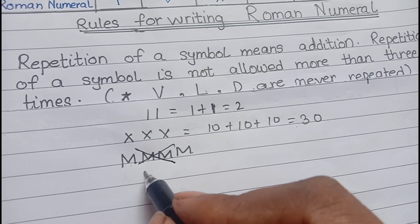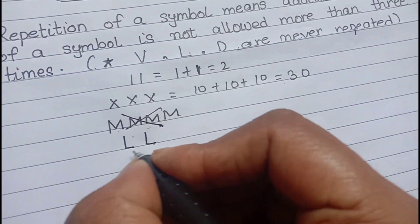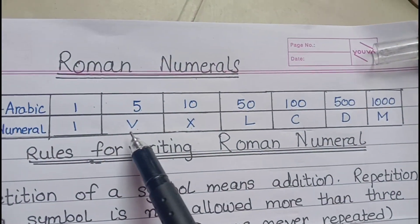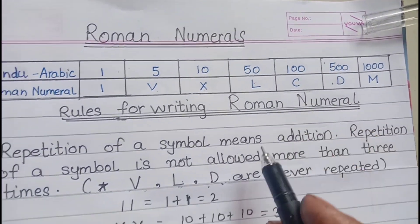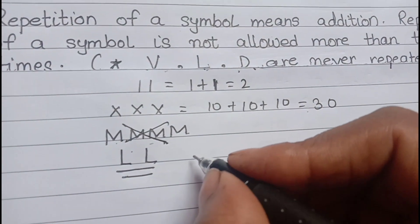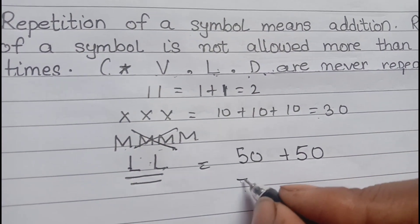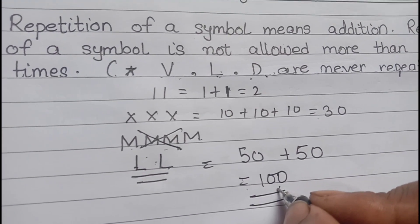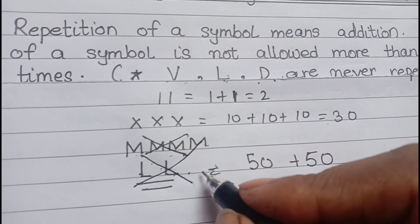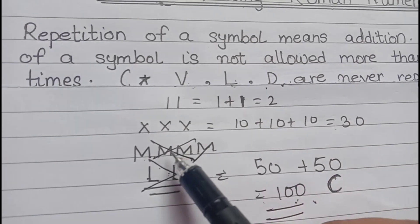There is one exception: the symbols V, L, and D are never repeated. The similarity between V, L, and D is that they all represent numbers with 5 — V is 5, L is 50, D is 500. For example, L+L would be 50+50=100, but we already have the symbol C for 100. So there is no need to repeat L. That is why numbers with 5 are never repeated.